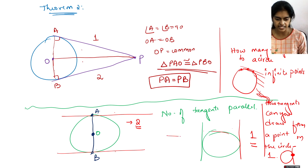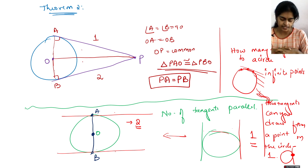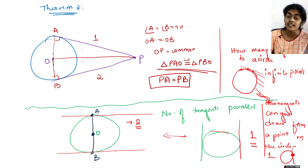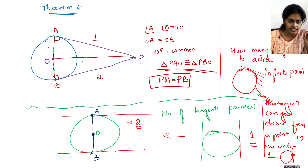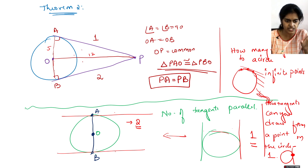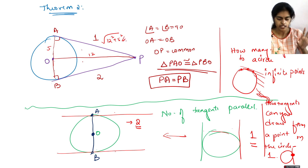An important point: O, A, P form a right-angle triangle. So if the radius OA is 5 units and the distance OP is 12 units, then AP is the tangent length. By the Pythagoras theorem, AP equals the square root of 12 squared plus 5 squared.